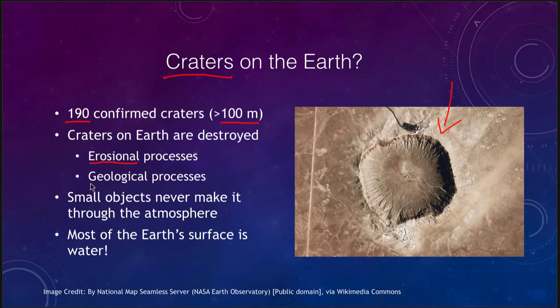Erosional and geological processes such as tectonics, creating new crust, and volcanic activity wipe out craters here on Earth, leaving us with just a few of the more recent ones. Also, small objects do not make it through the atmosphere, so smaller craters on Earth do not form as often because the atmosphere burns up those small objects.